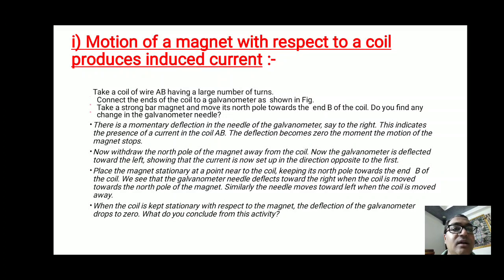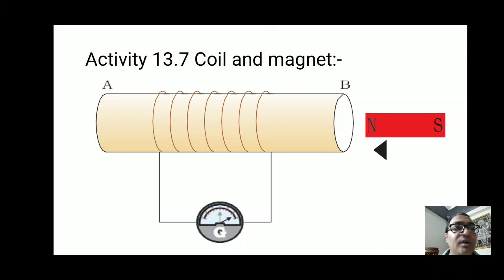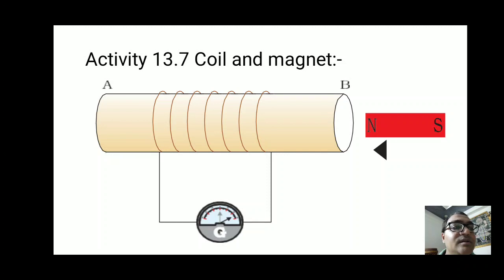There is a momentary deflection in the needle of the galvanometer. When we insert the bar magnet inside the coil, the galvanometer needle deflects towards the right. This indicates the presence of current in coil AB — induced current is generated due to the motion of the magnet. The deflection becomes zero the moment the magnet stops moving. So the motion of the magnet is important; due to its motion, current is produced inside the coil and shown by the galvanometer.